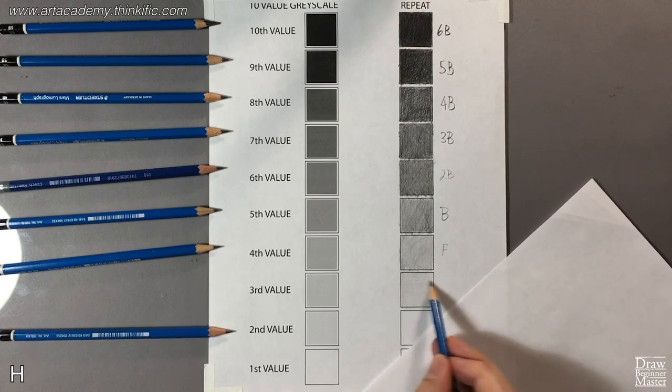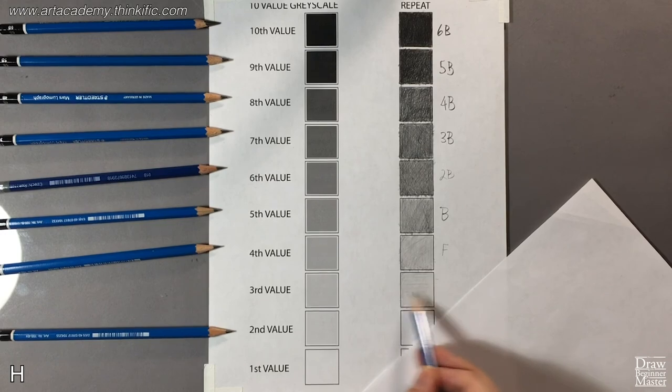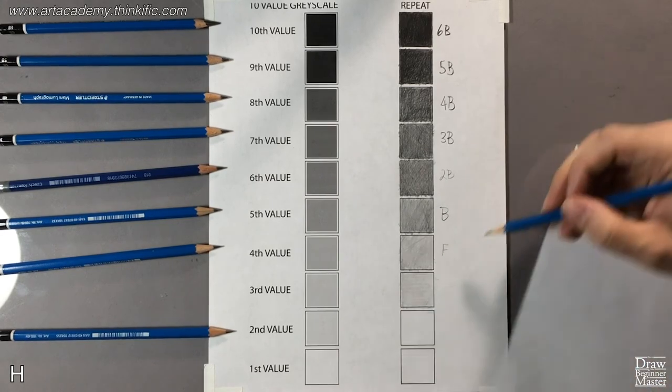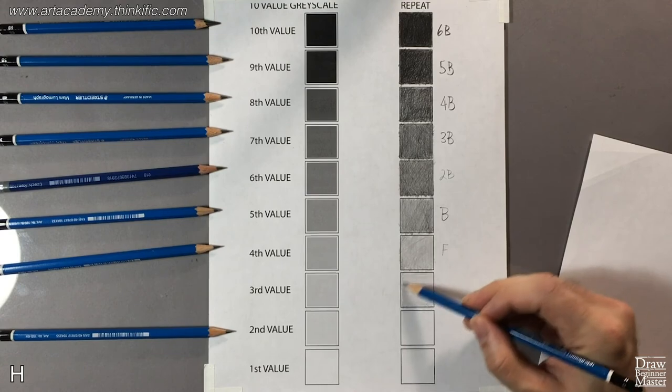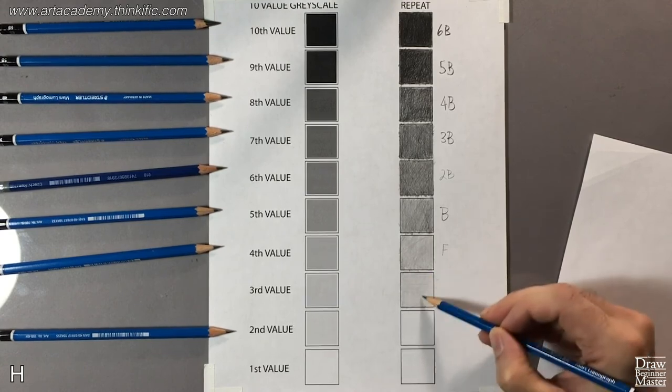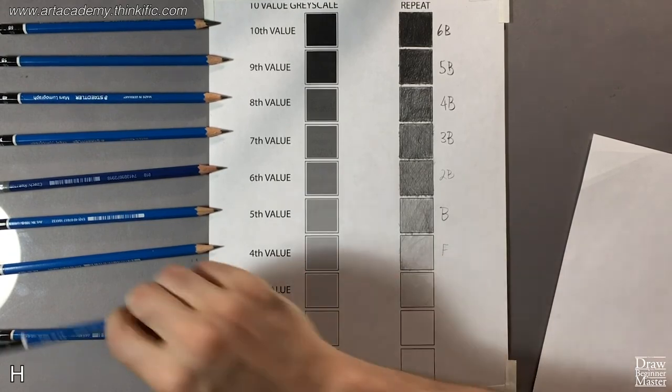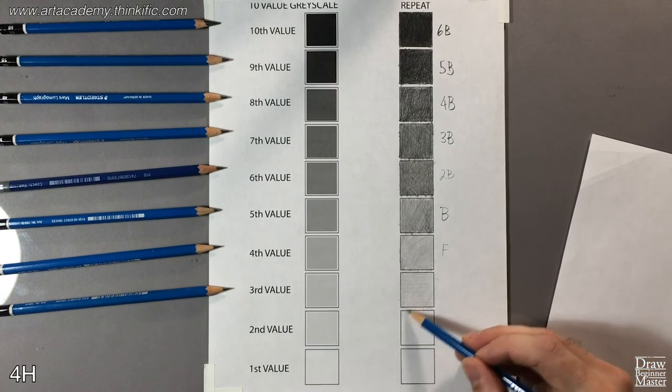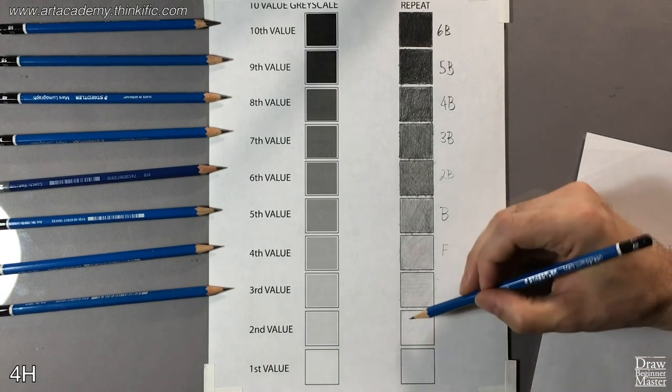The better you get at shading, the fewer pencils you'll need. As I said earlier, each one of these pencils is capable of covering a spectrum of values. So for example, once you get some practice, you'll be able to use a 2B or 3B pencil to cover all your shading from 7th value to 10th value, or an H lead to cover 2nd to 4th value.